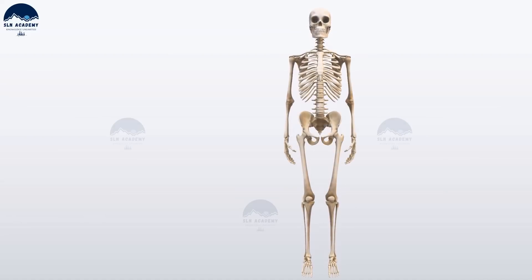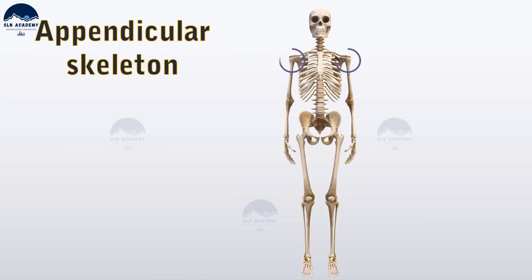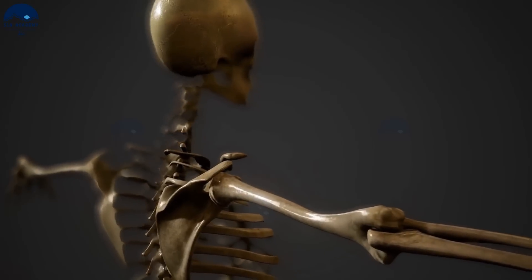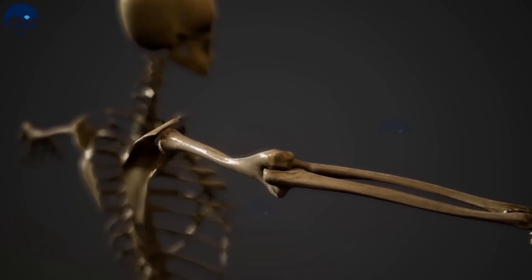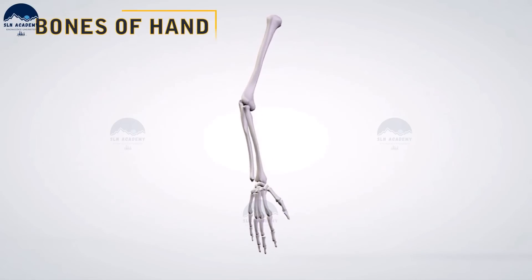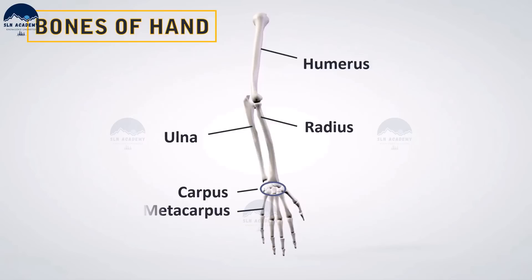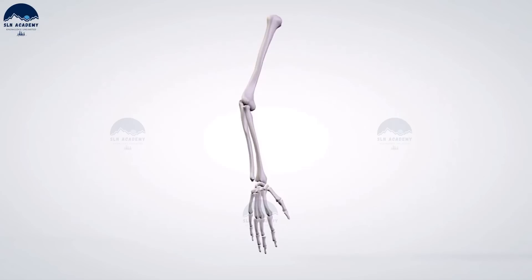The appendicular skeleton is formed by the shoulder girdle, the pelvic girdle, and the bones of the upper and lower limbs. The bones of the hand are the humerus, radius, ulna, eight carpals (wrist bones), five metacarpals (palm bones), and 14 phalanges.